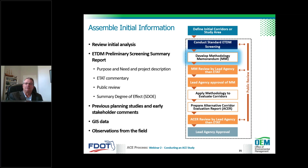One notable item is the summary degree-of-effect rating you receive from various agency categories — for example, whether an endangered species area will have no impact, minimal, moderate, or substantial impact. There's also room for listing enhancements where the project benefits something. Most importantly, watch for whether agencies are identifying a potential issue that will require future resolution or mitigation.